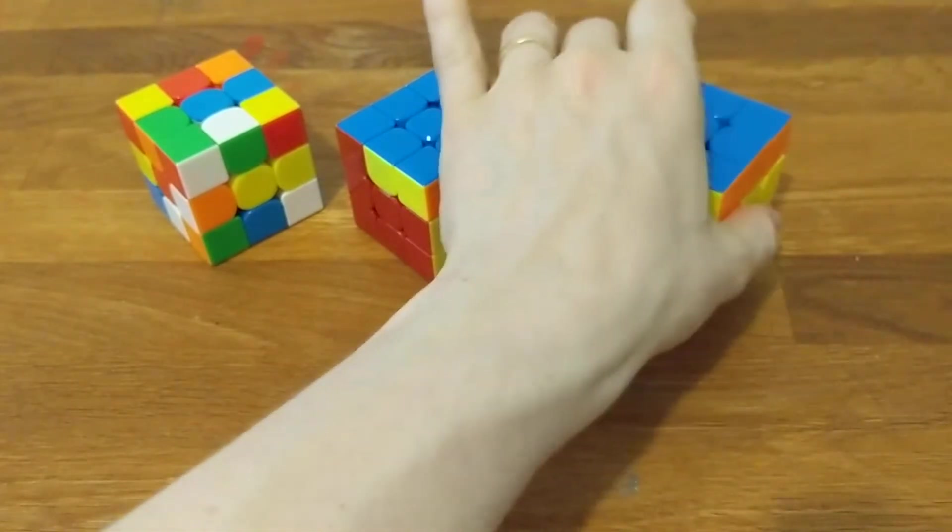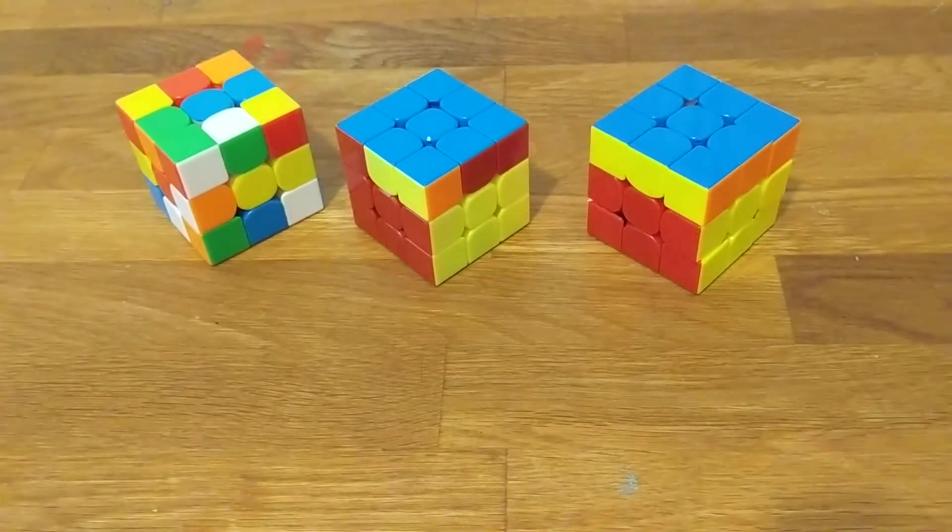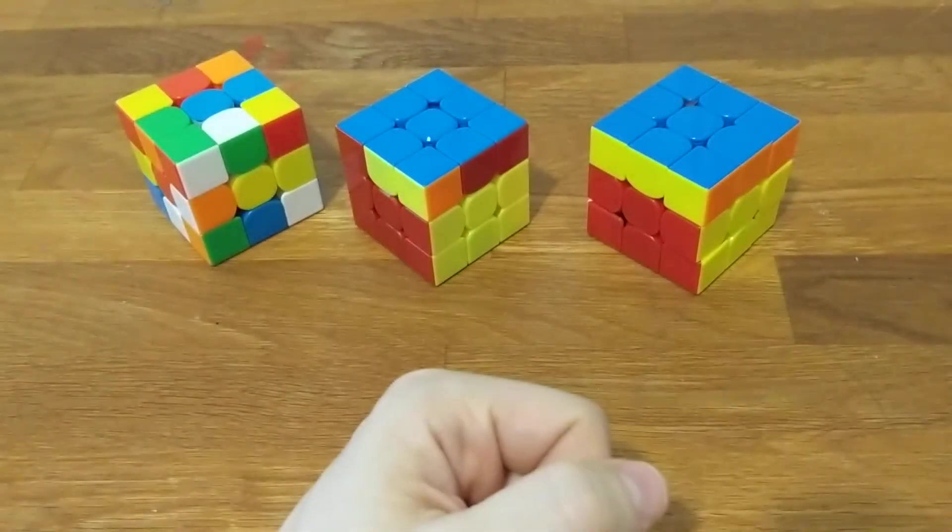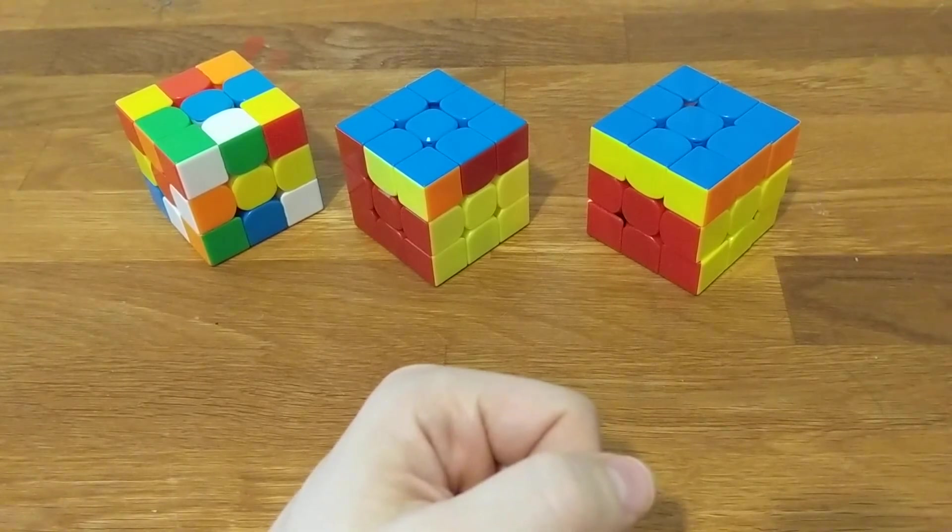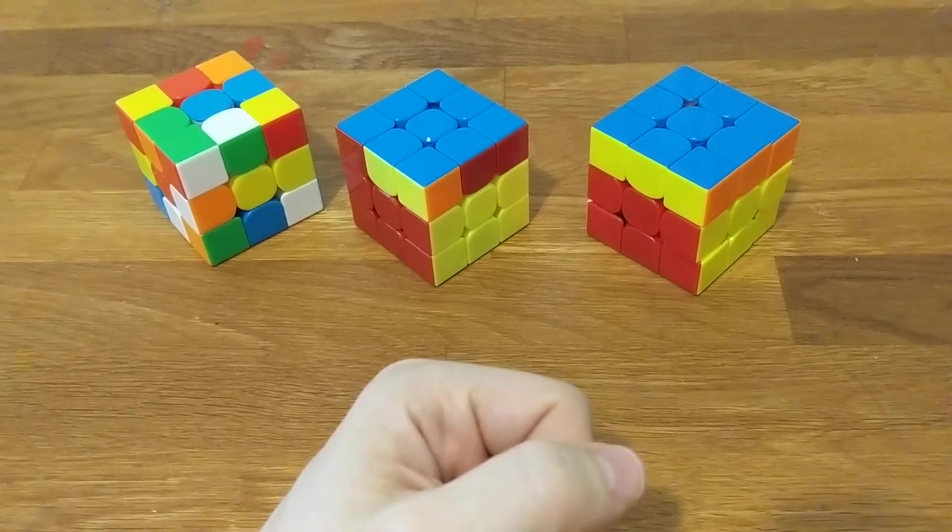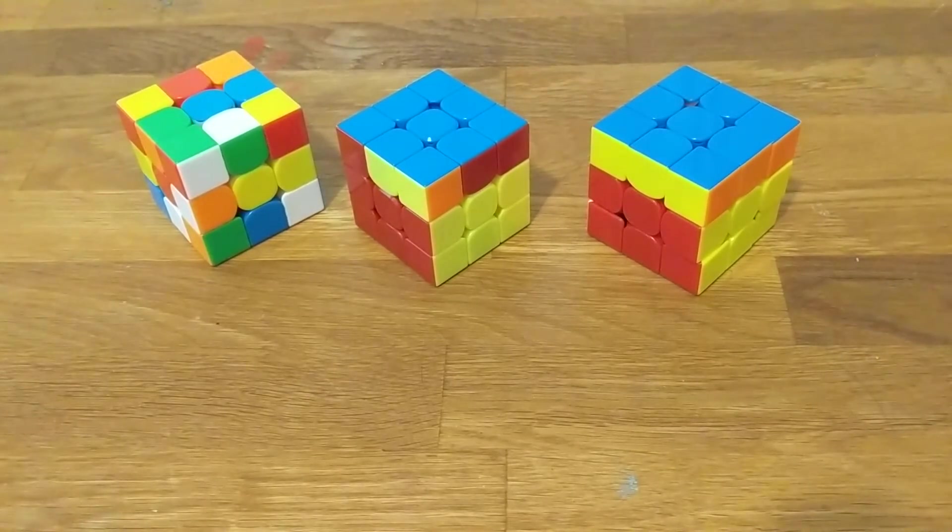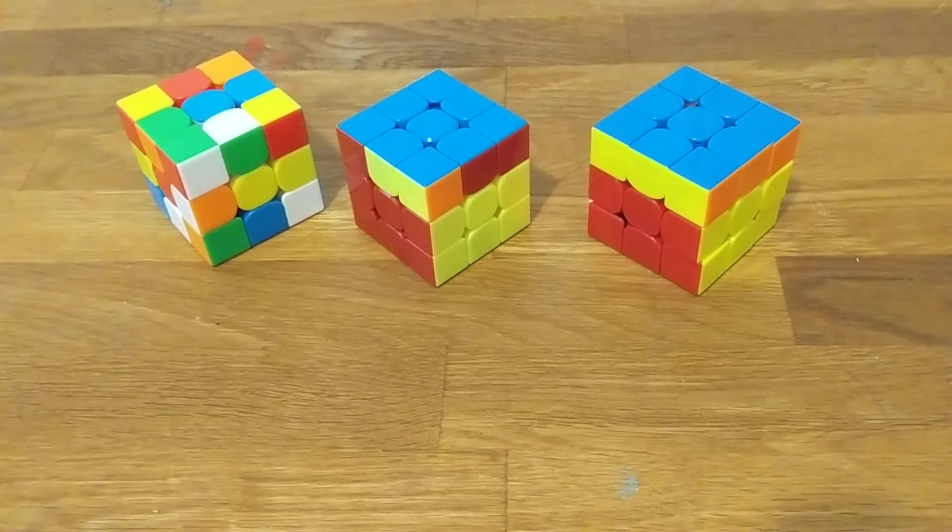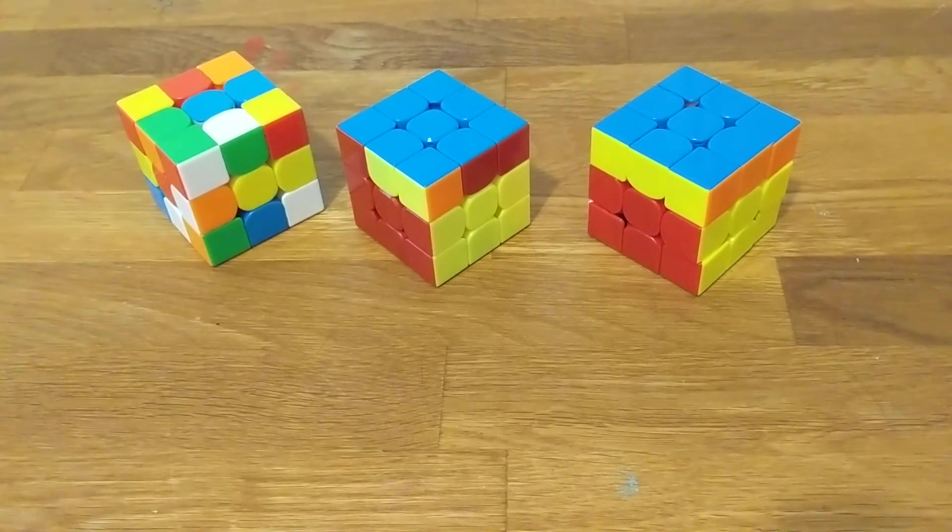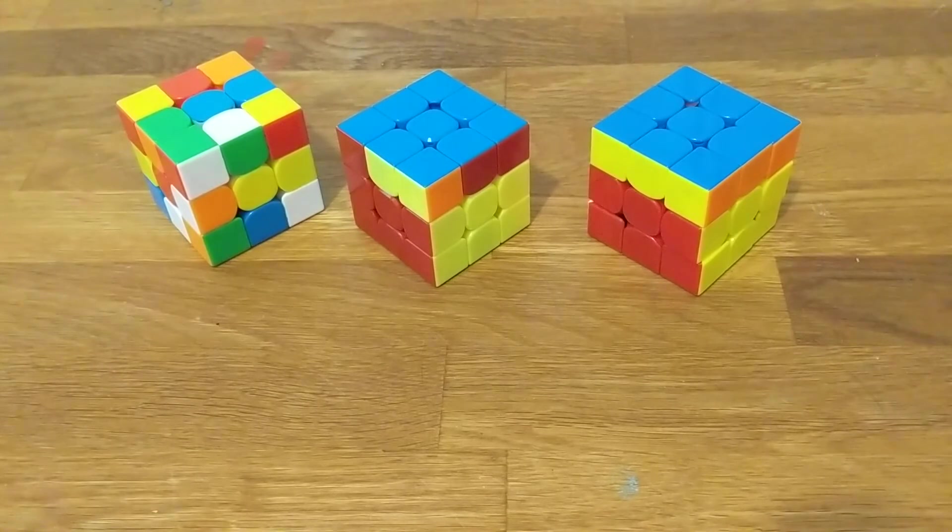Now the long version. Saying that a scramble has parity means that it has odd parity, which means that we need to swap pieces an odd number of times to solve the cube. This is why odd parity scrambles have an odd number of letters in their memo. Since commutators always do an even number of swaps, commutators can only directly solve even parity scrambles.